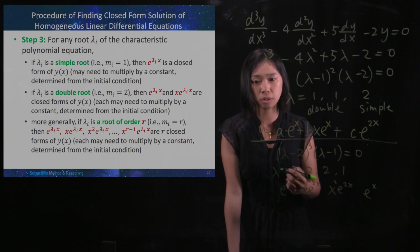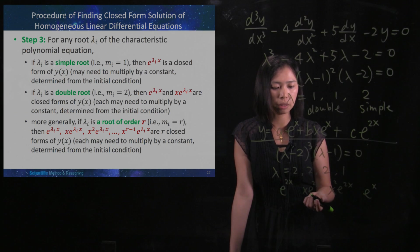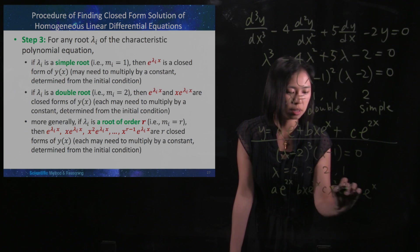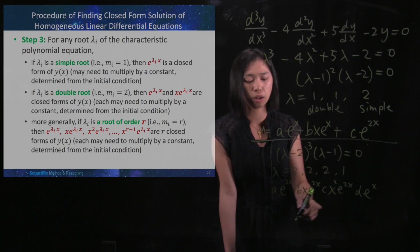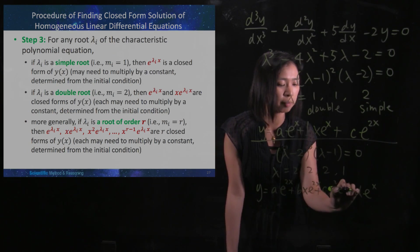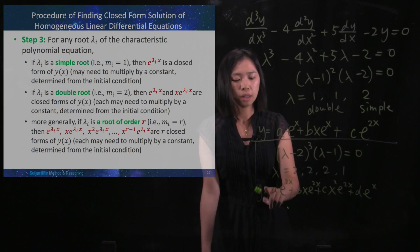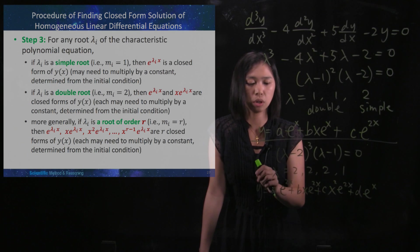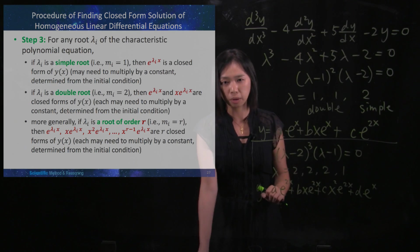And then you still need to multiply by a constant. Maybe I multiply them by a, b, c, d. So a, b, c, d are constants. And then this is the y and then I add them up. So this y would be the solutions to the differential equation with this as the characteristics polynomial.